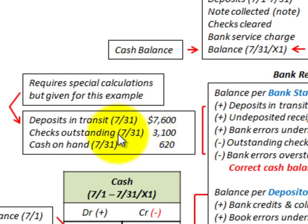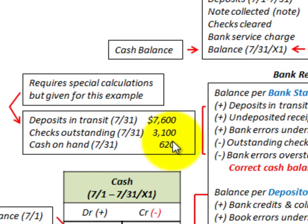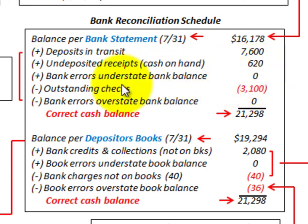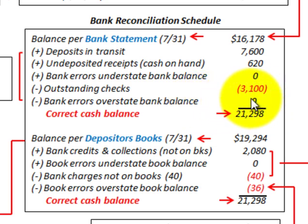There are also outstanding checks that haven't cleared the bank yet at July 31 — $3,100. And there's cash on hand for $620. So to reconcile the bank balance, we add deposits in transit of $7,600, add undeposited receipts (cash on hand) of $620, add bank errors understating the balance of zero, and subtract outstanding checks of $3,100. No bank errors overstating the balance either, giving us a correct cash balance per the bank statement of $21,298.